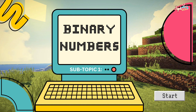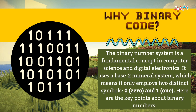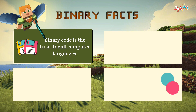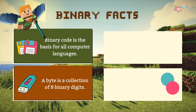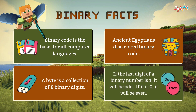For our first subtopic, the binary numbers. The binary number system is a fundamental concept in computer science and digital electronics. It uses a base-2 numeral system, which means it only employs two distinct symbols, 0 and 1. Binary code is the basis for all computer languages. A byte is a collection of 8 binary digits. And if the last digit of a binary number is 1, it will be odd; if 0, it will be even.